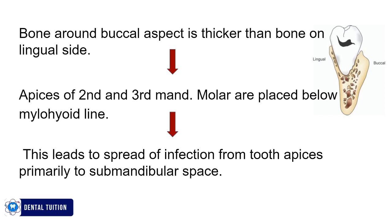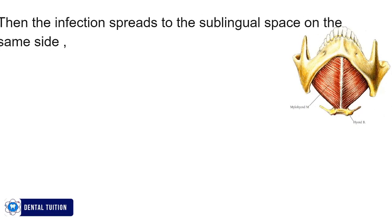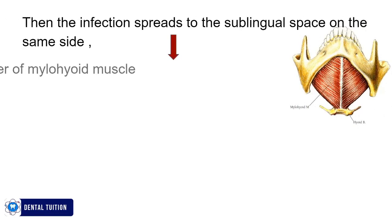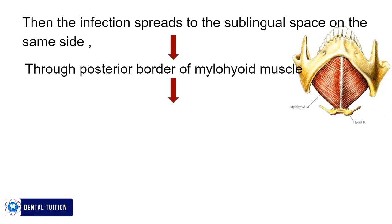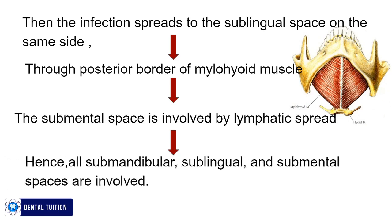The infection then spreads to the sublingual space on the same side, as the sublingual space is connected to the submandibular space via the posterior border of the mylohyoid muscle. The submental space is involved by lymphatic spread. Hence, all three spaces — submandibular, sublingual, and submental — become involved, leading to Ludwig's Angina, which is a life-threatening condition that dentists can encounter.